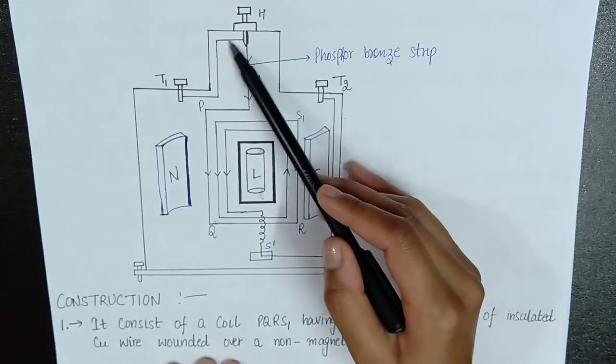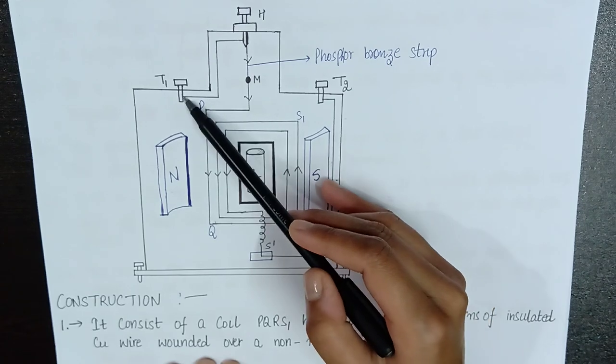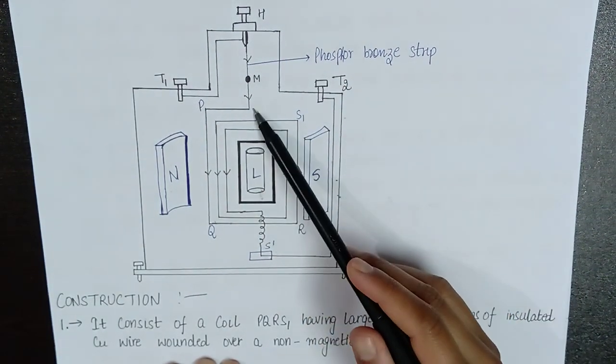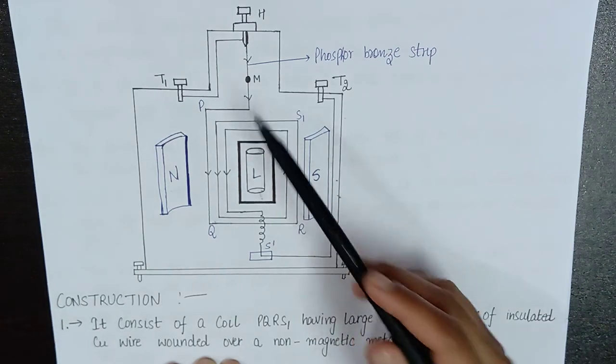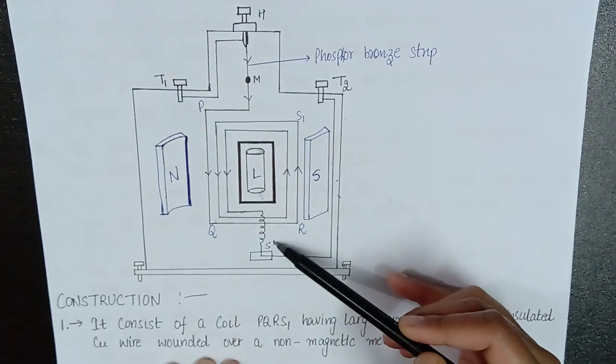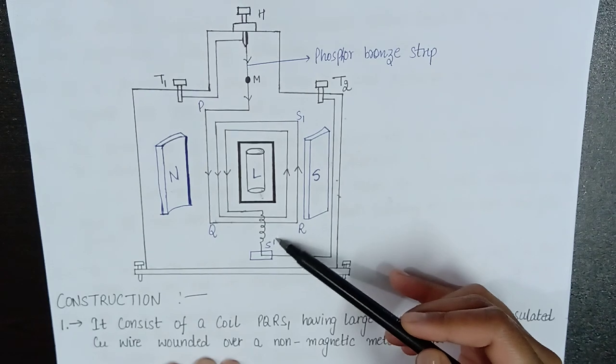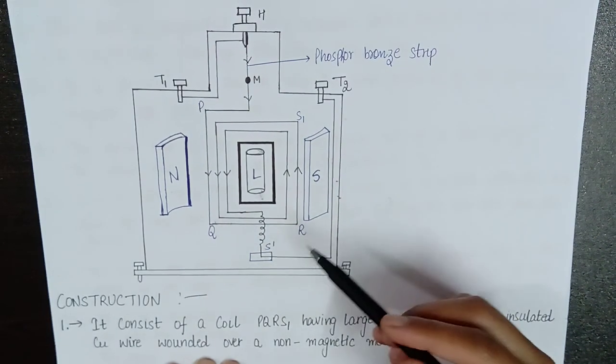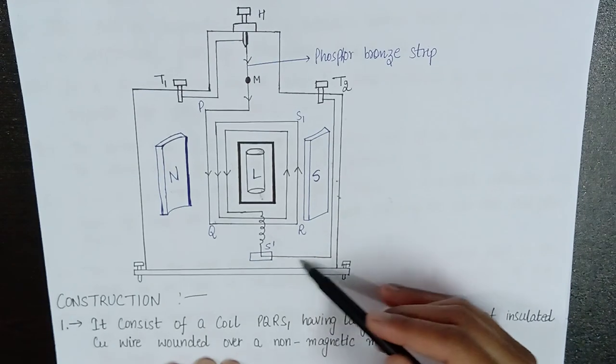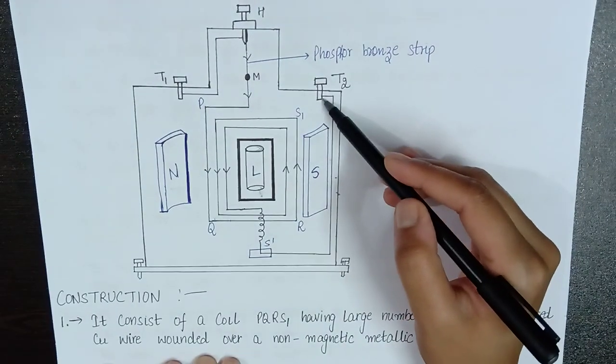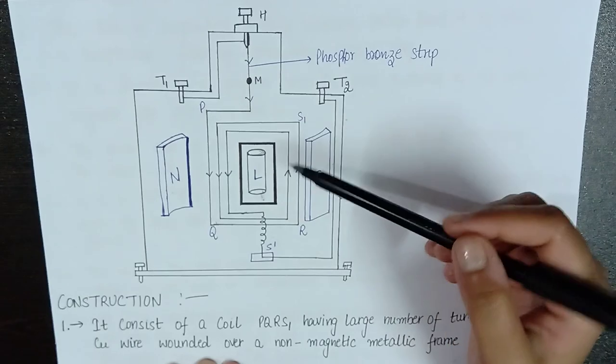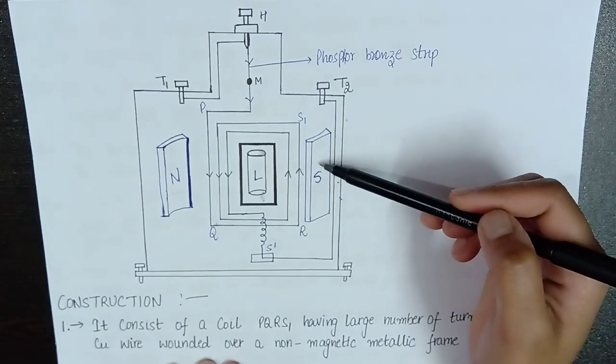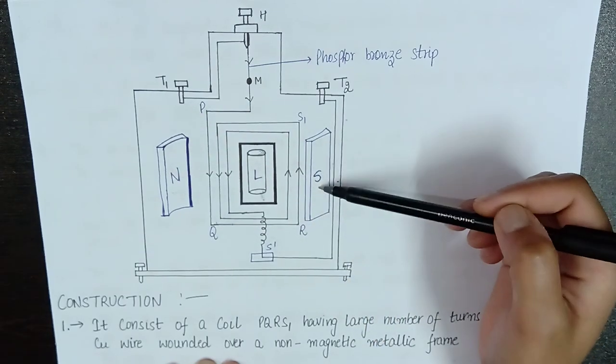And the next end is connected to the terminal T1. And if we look at the lower end, it is connected to the spring S dash, a hair spring S dash. And the next part of this spring S dash is connected to the terminal T2. And we have this setup in a uniform magnetic field which is generated by the two pole pieces, North pole and South pole.